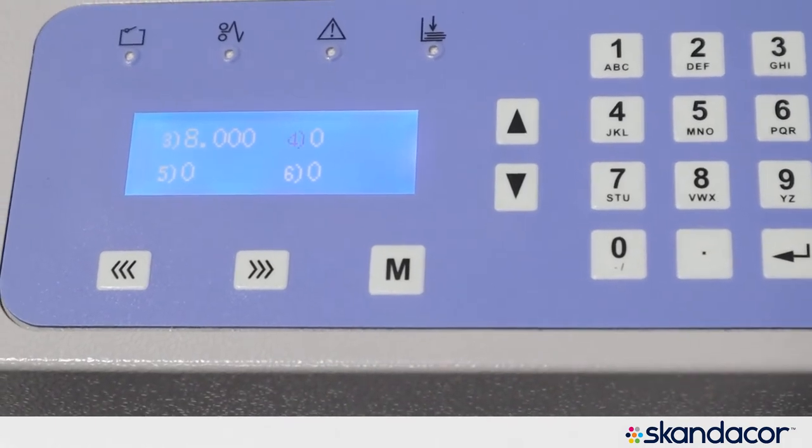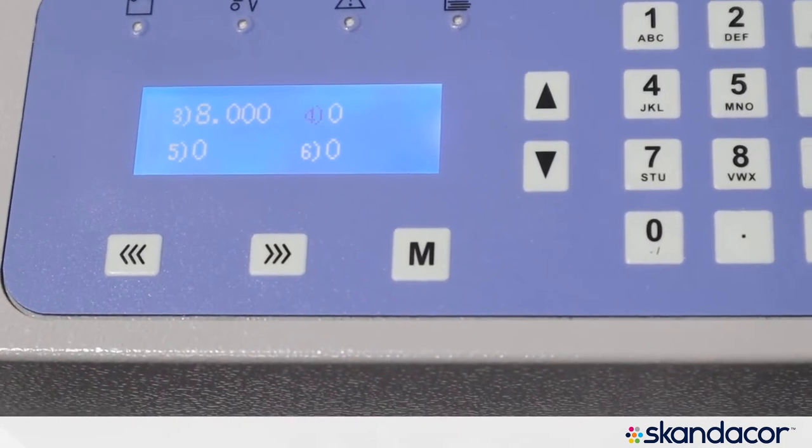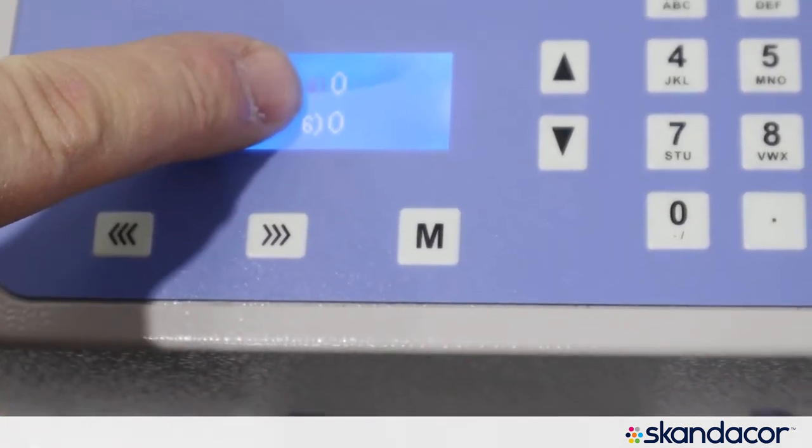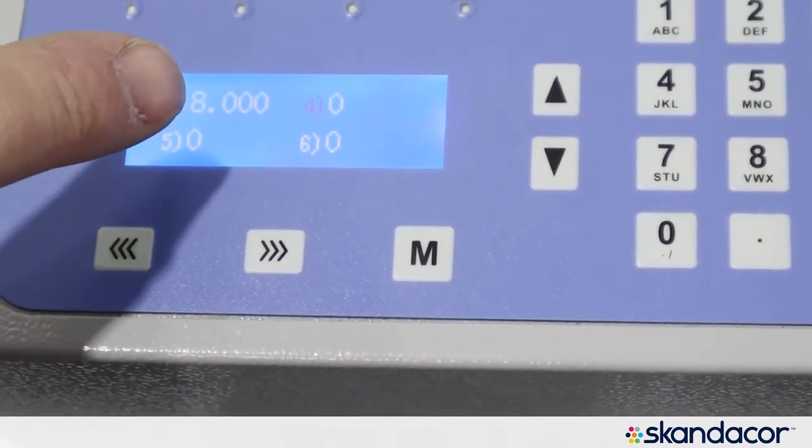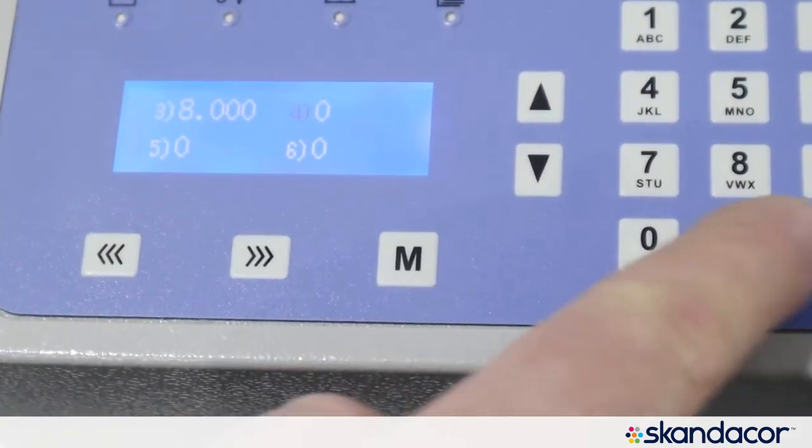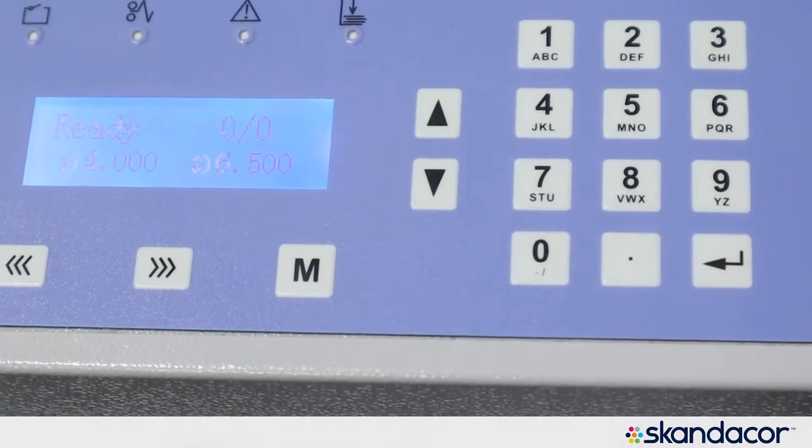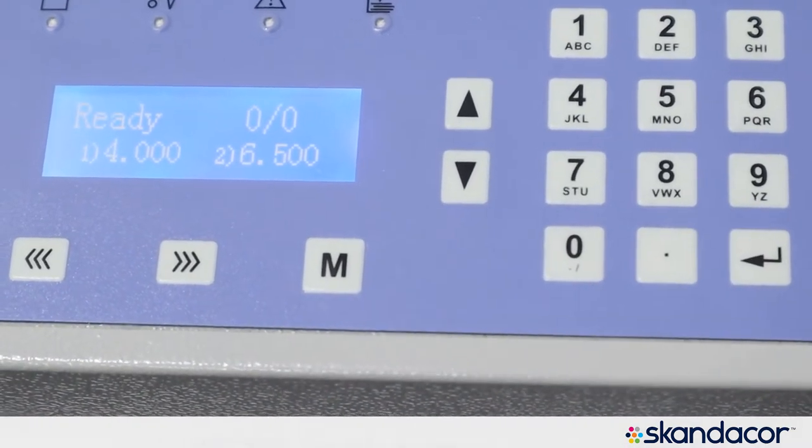I only have those three creases. If I only had two creases, I would only input two numbers. But the point is when it bounces forward to the next number, it is blinking. You simply hit enter. Enter that fourth position as a zero and that is how you tell the machine that you have completed programming your job.